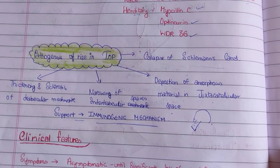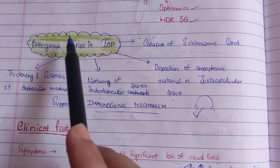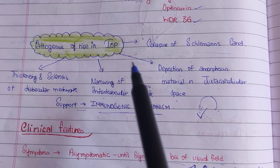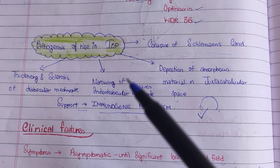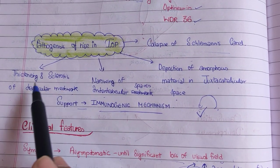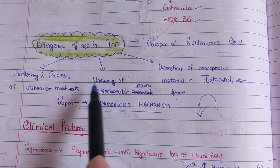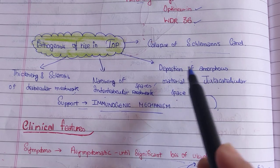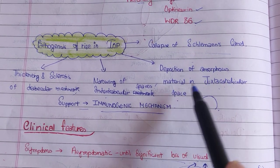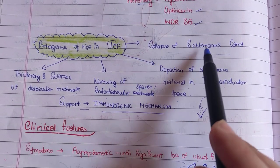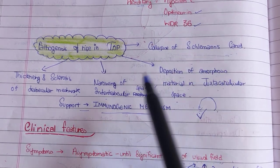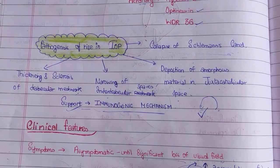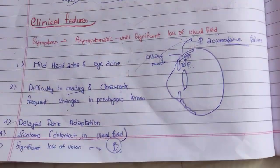Let us talk about the pathogenesis. Changes can occur in the trabecular meshwork due to which drainage decreases. These include thickening and sclerosis of the trabecular meshwork, narrowing of inter-trabecular spaces, deposition of amorphous material in the juxta-canalicular spaces, and collapse of the canal. All of these are supported by immunogenic mechanisms according to studies conducted so far.